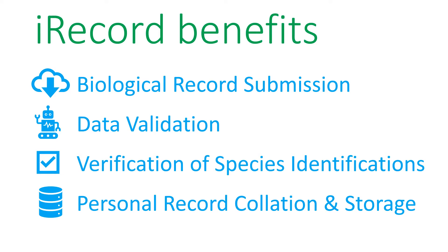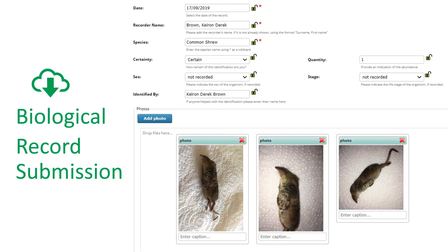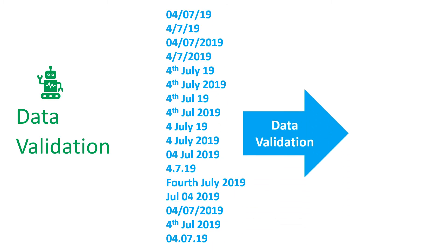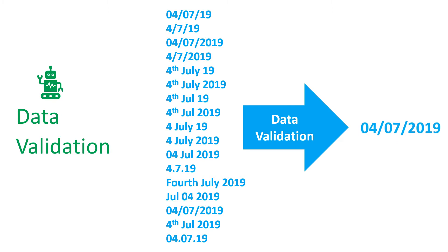Some key benefits that iRecord facilitates include biological record submission, data validation, verification of species identifications, and personal record collation and storage. The iRecord system acts as a biological record submission form and allows the recorder to pass on their data to biological recording schemes and societies. iRecord facilitates data validation by ensuring that data is recorded in formats that are consistent and correct.